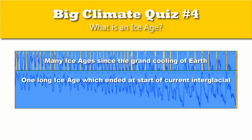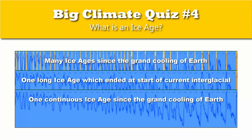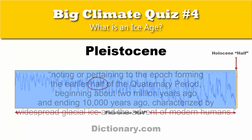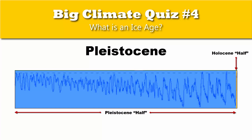So we have conflicting definitions. Which definition makes the most sense? It helps to understand more about the terms used in those definitions. The Pleistocene is defined as the epoch forming the earlier half of the Quaternary Period, beginning about 2.6 million years ago and ending around 10,000–12,000 years ago, characterized by widespread glacial ice and the advent of modern humans. Their use of the word 'half' is misleading — the Pleistocene was roughly 2.6 million years long, while the Holocene has been only about 12,000 years long.